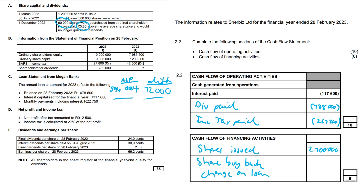The 594,000 plus the 72,000 gives us 666,000. To recap: the average share price amount goes into ordinary share capital; the difference between what you paid and the average share price goes into retained income; and the total — average share price plus the difference — goes into cash flow. So 594,000 plus 72,000 equals 666,000.